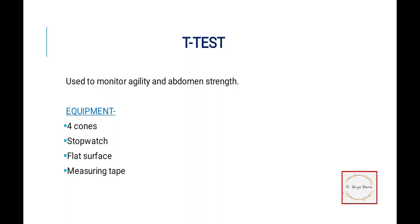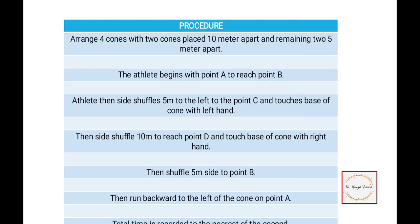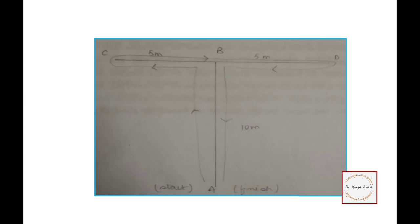Another test is the T-test. It is used to monitor agility and abdomen strength. Equipment needed: cones, stopwatch, flat surface, and measuring tape.